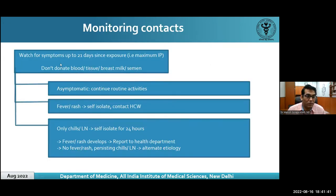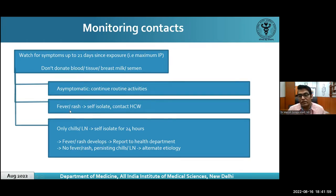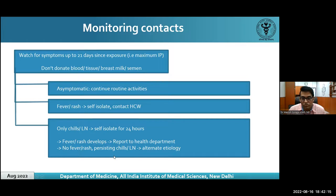For contact monitoring: contacts should be monitored for symptom onset for 21 days — the maximum incubation period. They should not donate blood or tissue. If asymptomatic, they can continue routine activities. If fever and rash develop, they should self-isolate and contact a healthcare worker. If they develop other symptoms such as chills or lymphadenopathy without fever, they should self-isolate for 24 hours and report if fever or rash develops, or seek alternate etiology if symptoms resolve.